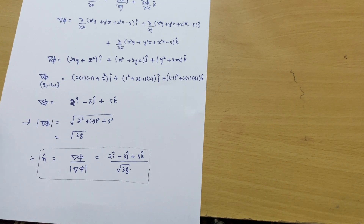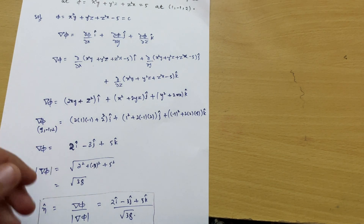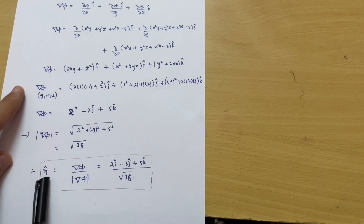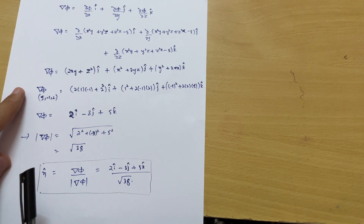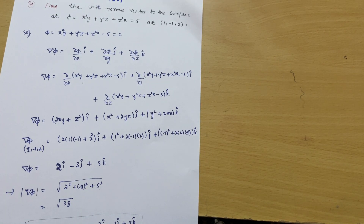I hope this is clear. The concept is simple — you just apply the formula and compute the partial derivatives, then substitute to get the unit normal vector. Please share this video with your batch mates or classmates. Thanks for watching.